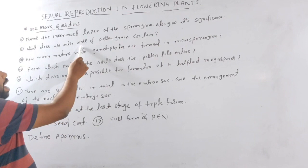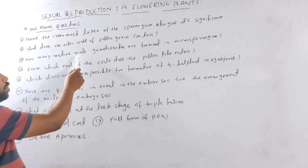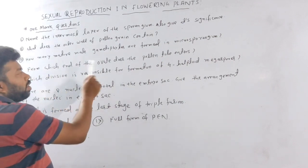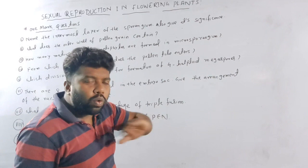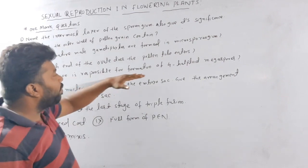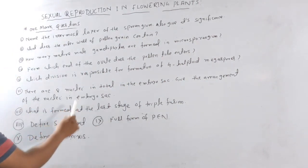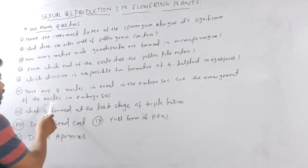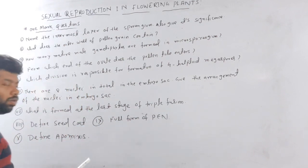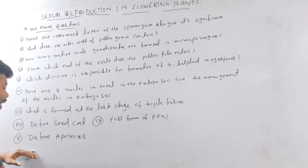Short questions: What does the outer wall of the pollen grains contain? How many mature male gametophytes are formed in a microsporangium? For which end of the ovule does the pollen tube enter? Which division is responsible for the formation of 4 haploid megaspores? Give the arrangement of the 8 nuclei in the embryo sac. What is formed at the last stage of triple fusion? Define seed coat and define the full form of PAN. Define apomixis.